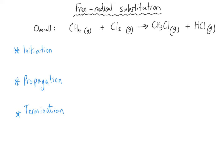Let's look at the simplest free radical substitution reaction — the one most commonly encountered in exam questions and on all exam specifications. This is the reaction between methane gas and chlorine gas to make chloromethane and HCl, with UV written above the arrow because this will only happen in the presence of ultraviolet light.